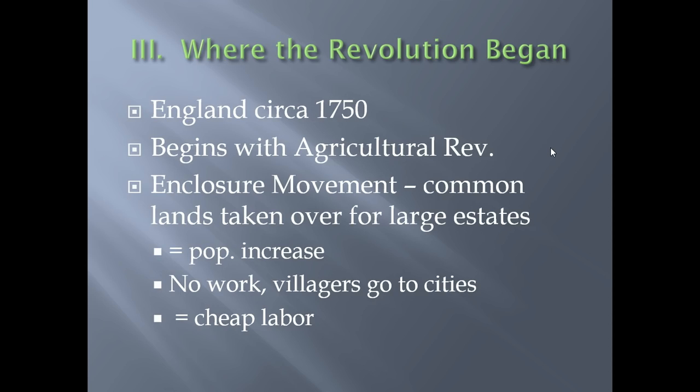As a result, the population increases. The other huge deal is the enclosure movement. As the population increases and agricultural products become more valuable, the common lands that used to be used by everyone to graze cattle on are suddenly in high demand as a place to grow crops for sale to this burgeoning population in England. At the same time that population is increasing, the need for agricultural workers is actually decreasing because of things like the seed drill. So there is not a lot of work to be had, people can't make ends meet without common lands, and they end up moving into cities where they become cheap labor for these new factories.